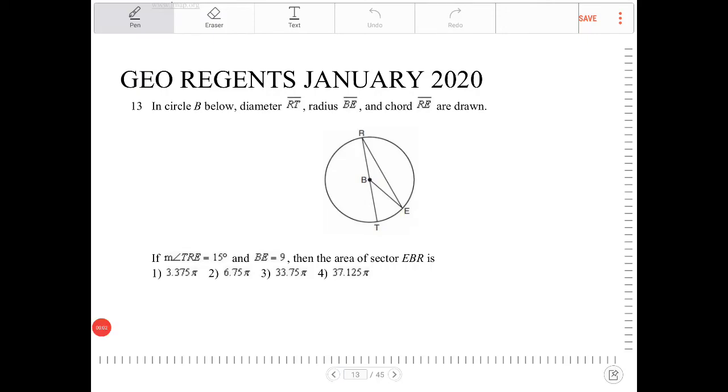In circle B below, diameter RT, radius BE, and chord RE are drawn.